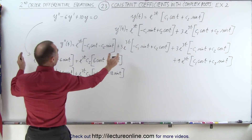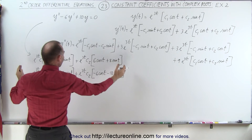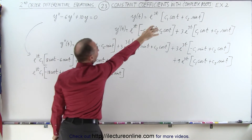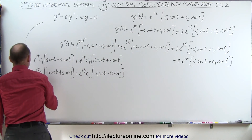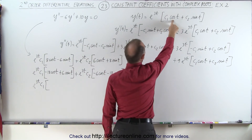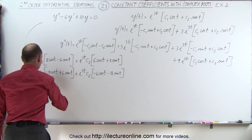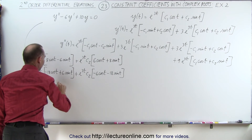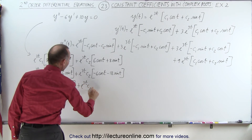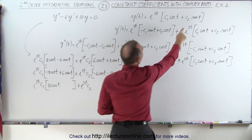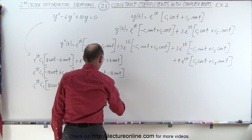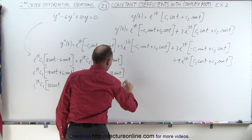Now we add 10 times y. Gathering c1 terms: only a cosine, so 10 cosine of t, but no sine terms. Gathering c2 terms: only a sine, so plus 10 sine of t, but no cosine terms.